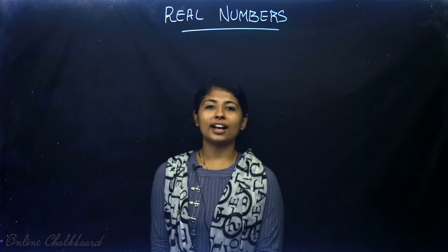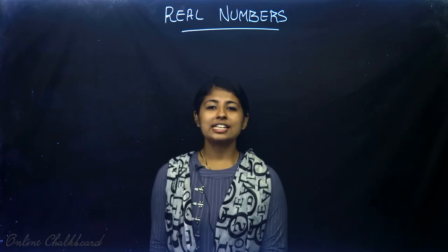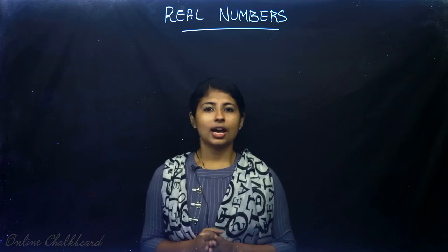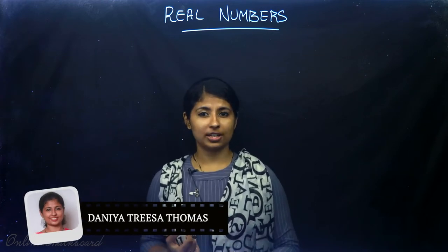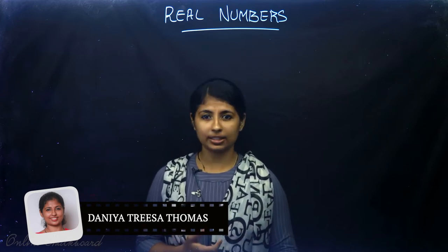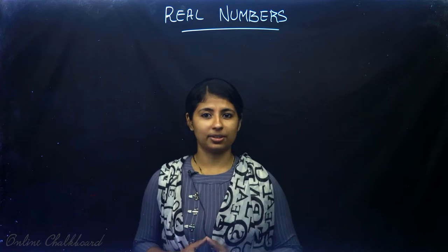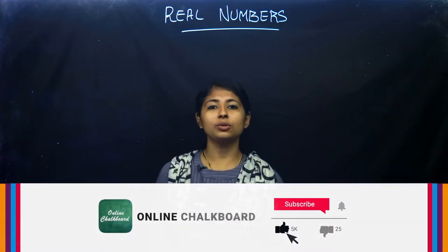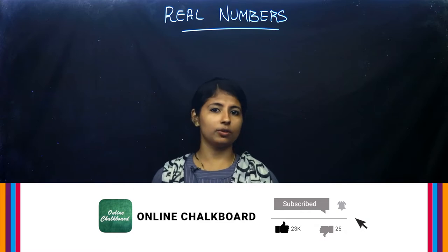Hello friends, welcome back to Online Chalkboard. We are dealing with class 10 CBSE chapter 1 real numbers, and we have so far learned about Euclid's division lemma, Euclid's division algorithm, the fundamental theorem of arithmetic, and how to prove irrational numbers. If you haven't watched those previous videos, the link is available in the description box.